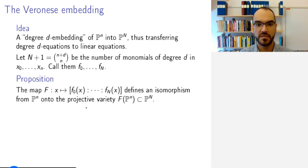So the first thing we need to check is that F(P^n) is a projective variety. But this map is a regular map. Why is this a regular map?